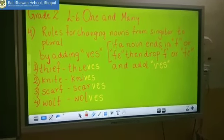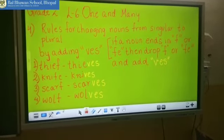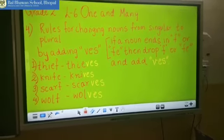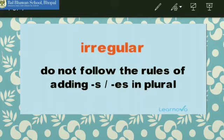Children, remember the rule: if the noun is ending with F or FE, then drop the F or FE and add VES. So children, you have learned the rules of changing singular nouns to plural nouns. Now let's have a look at some irregular nouns where we do not follow the rules of adding ES, S, VES, or IES.